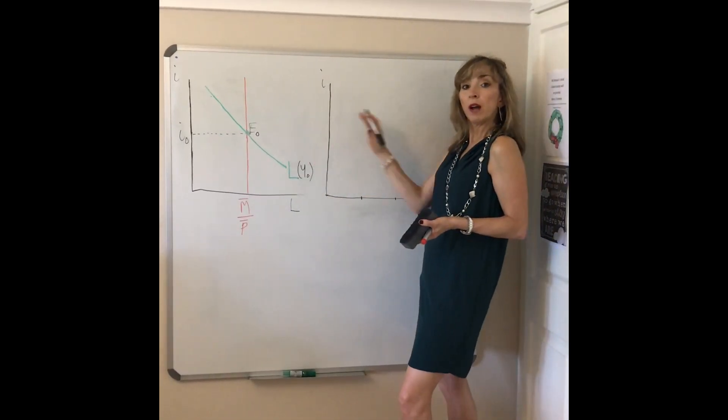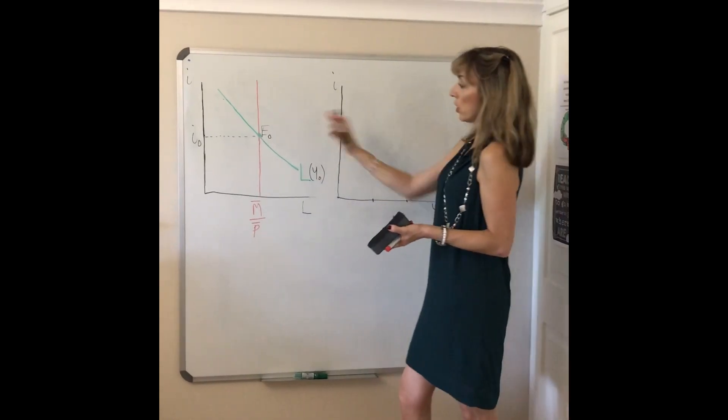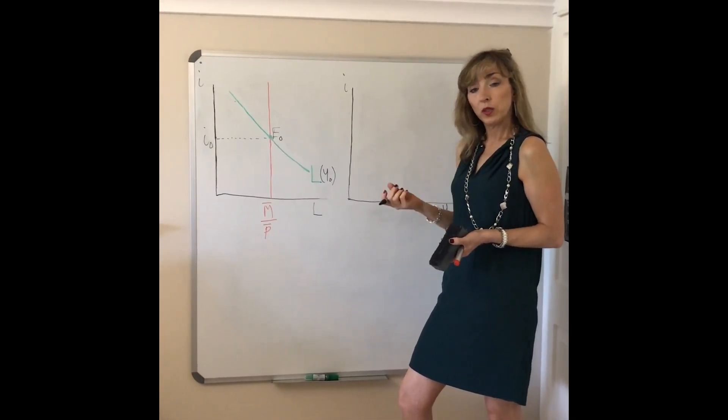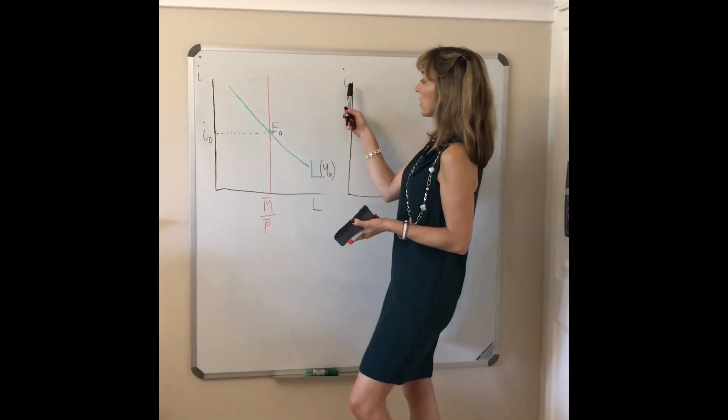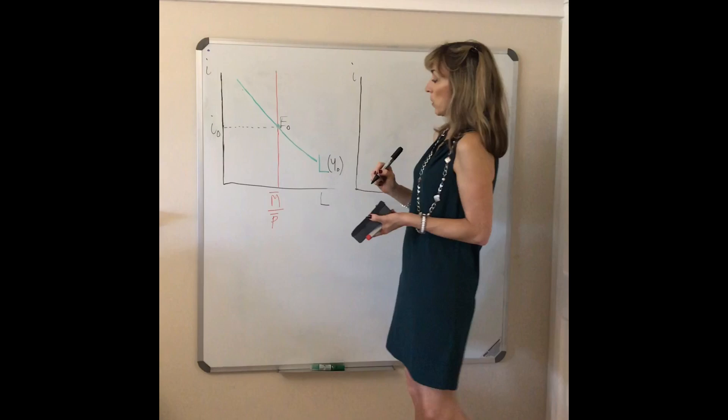We now want to derive our LM schedule and to do so please put the two set of axes alongside each other, not the one underneath the other as you would when you derive the IS curve. That's because here we've got the same thing on the vertical axis, the interest rate, so we want to see what happens if your income level rises.